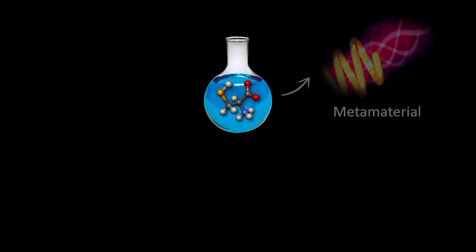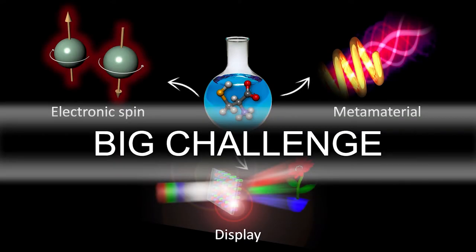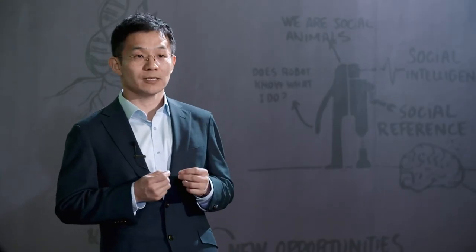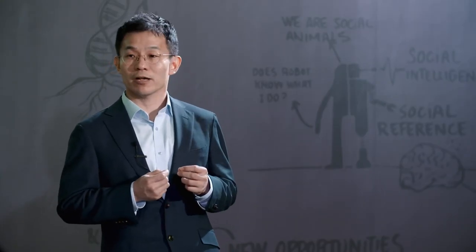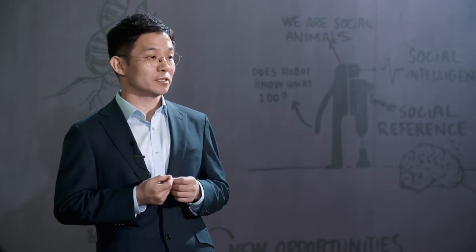Beyond molecular chirality, there are exciting opportunities to control the chirality of the electron — that is, spin — or the chirality of the electromagnetic wave for optical devices. The biggest challenge is how to translate molecular chirality into synthetic technology.